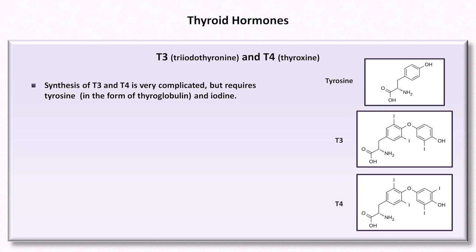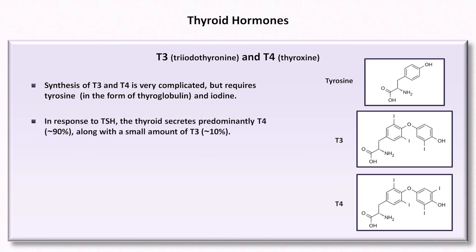The thyroid gland is relatively unique among endocrine organs in its ability to store large amounts of preformed hormone. This can become relevant in diseases such as Hashimoto's thyroiditis, an autoimmune-mediated destruction of the thyroid gland, which can transiently result in hyperthyroidism due to abrupt release of hormone. In normal physiologic conditions, in response to TSH, the thyroid secretes predominantly T4, along with a small amount of T3. The ratio of T4 to T3 is about 90% to 10%.